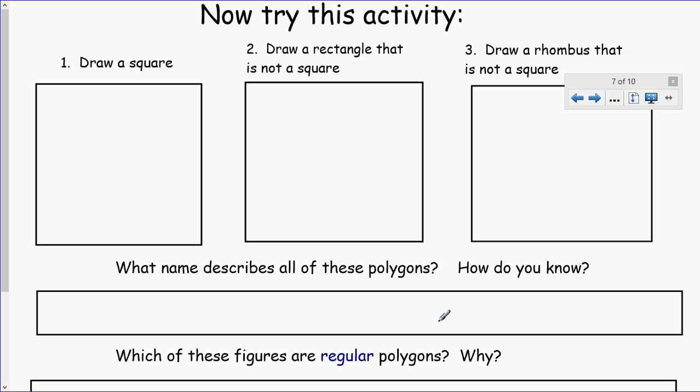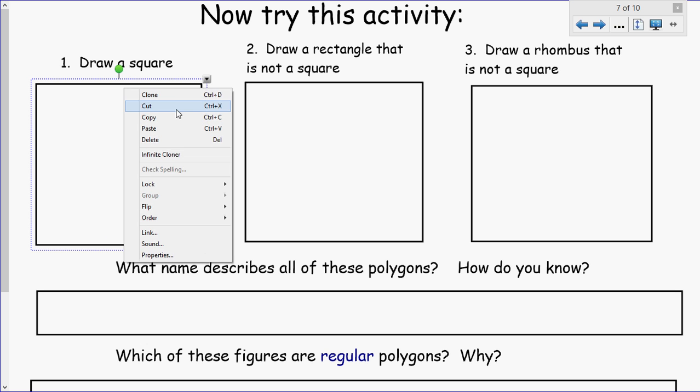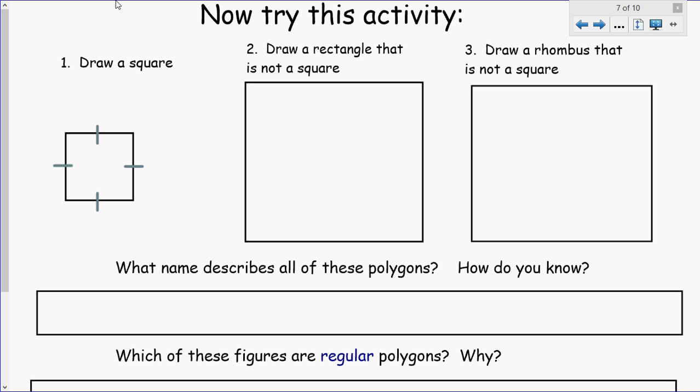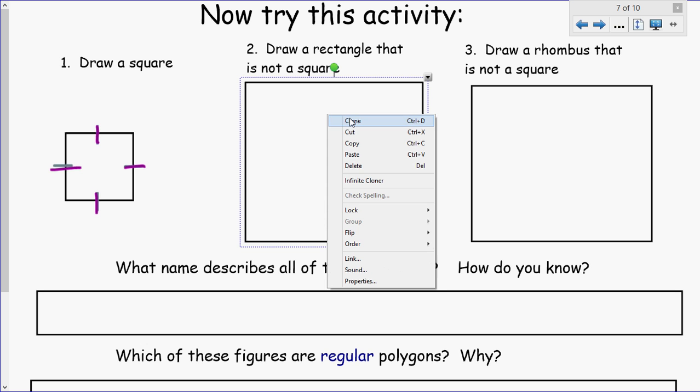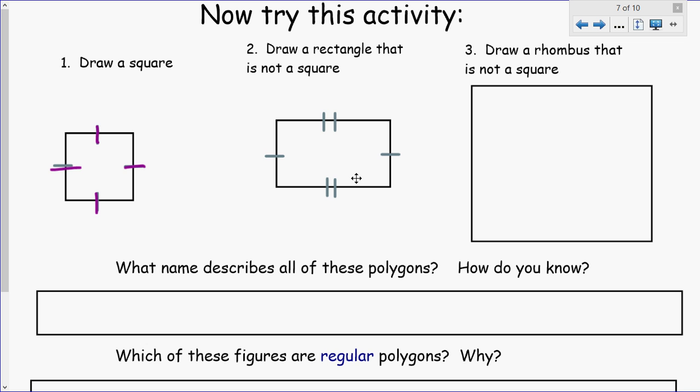Now we have one more activity I'd like you to try. If you want to pause the video and try this on your own and then check back in, feel free to do that. It says number one here, draw a square. So don't count the box on the notes as the square. Actually draw a square inside that square. You should have something that looks like this. I put four little marks through the sides to show that this side is equal to all the other sides. Next up, you are going to draw a rectangle that is not a square. Hopefully you are going to come up with something like this. But that is a rectangle that's not a square. What I did here is I put one line through these sides because those are the same length, and I put a double line through these because those are the same length, but they're not the same as the other sides. That's geometry notation.